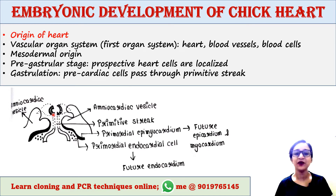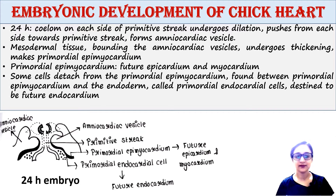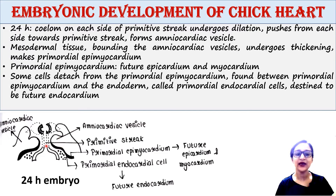At about 24 hours of incubation in the chick embryo, the coelom present on each side of the primitive streak undergoes dilation — dilation means swelling. This coelom pushes in from each side toward the midline, or toward the primitive streak, and forms the amniocardial vesicle. So the amniocardial vesicle is formed from the coelom present on both sides of the primitive streak.